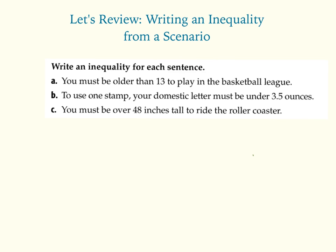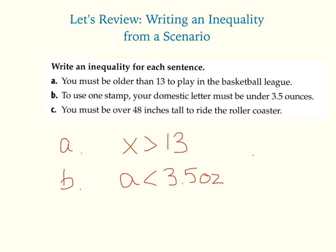Welcome back. A says you must be older than 13 to play basketball. I'm going to use the variable x to represent the person's age — x must be greater than 13. B says to use one stamp, your domestic letter must be under 3½ ounces. It can't be equal to 3½, so using variable A, it has to be less than 3½ ounces. C says you must be over 48 inches tall to ride the roller coaster — using variable y, y is greater than 48 inches.